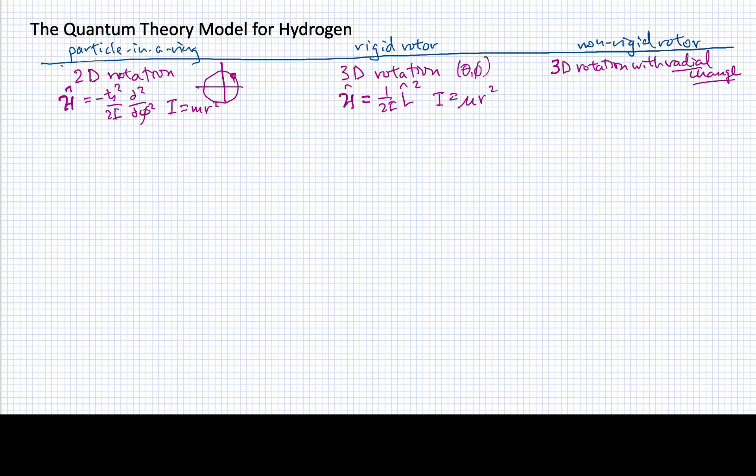We're now going to look at a more sophisticated Hamiltonian where we have a part due to the radius, the kinetic energy of the radius, plus our rotational part, the angular momentum squared divided by twice the moment of inertia.